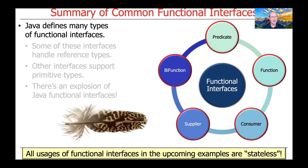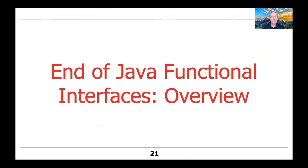Interestingly, all the examples we're about to look at are examples of stateless functional interface utilization. We're keeping things lightweight, easy to use, and avoiding side effects — which is key for functional programming. This is especially useful for concurrent and parallel processing, because we have much less to worry about in terms of shared mutable state, which is the root of all evil in concurrent and parallel programming. That concludes our overview of Java functional interfaces, and the rest of this lesson will examine those five most common functional interfaces.